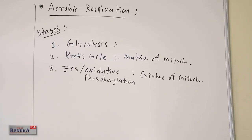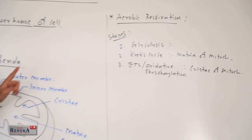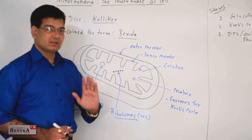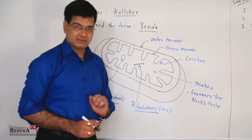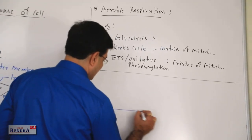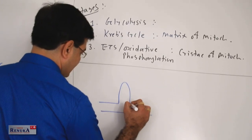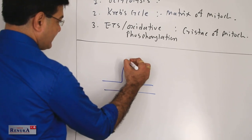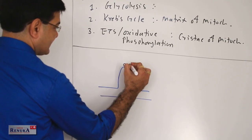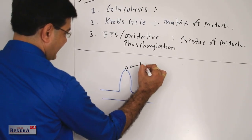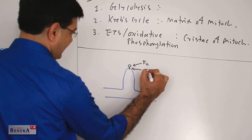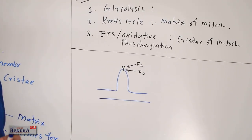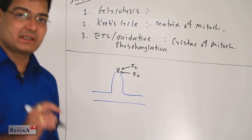So, Krebs cycle occurs in the matrix and the electron transport system occurs on the cristae membrane of mitochondria. On the cristae, F0 and F1 particles are present. F0 and F1 particles are mainly responsible for oxidative phosphorylation.